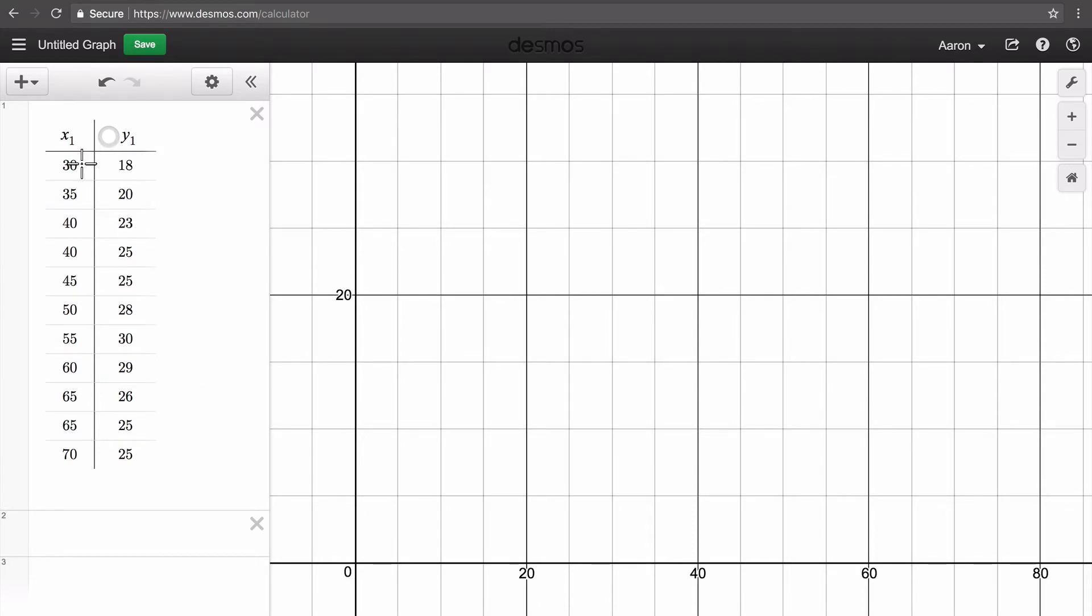So the first step that we should do is plot all of this data in a scatterplot. I have put it in a table here, and then we draw our scatterplot. Now it's time to take a look at our data.